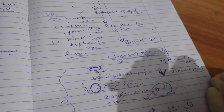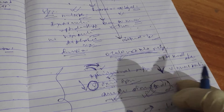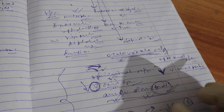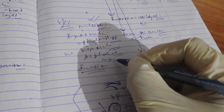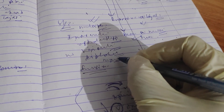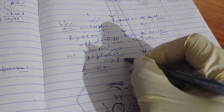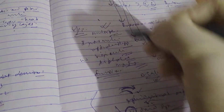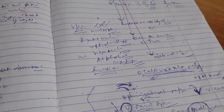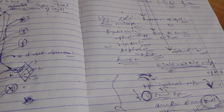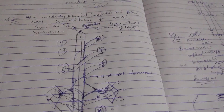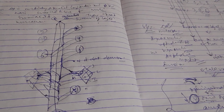There will also be saccadic movement of the abducting eyeball, and nystagmus will be present. So this is all about the medial longitudinal fasciculus.